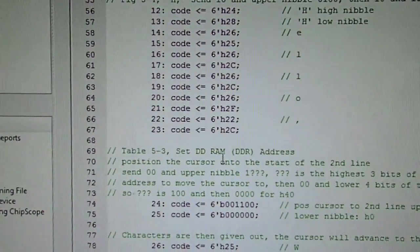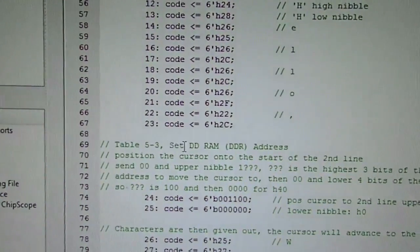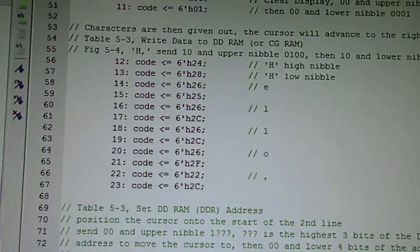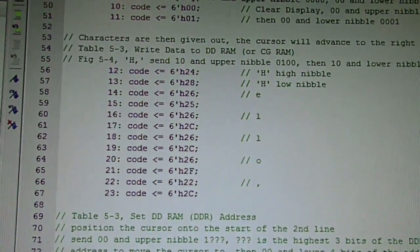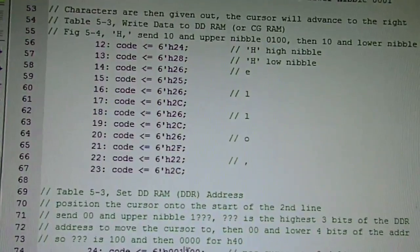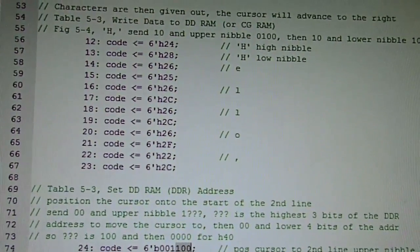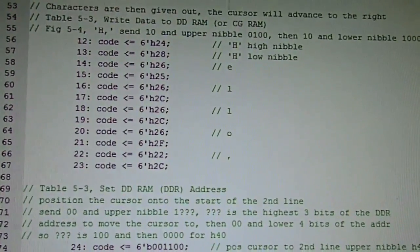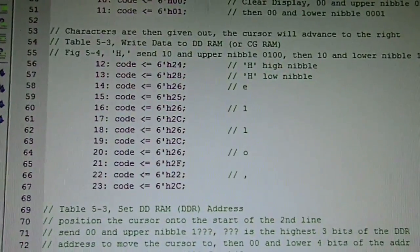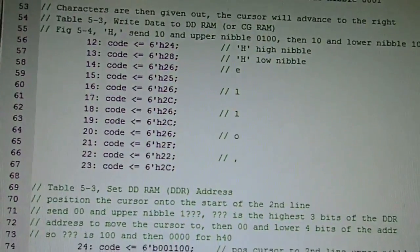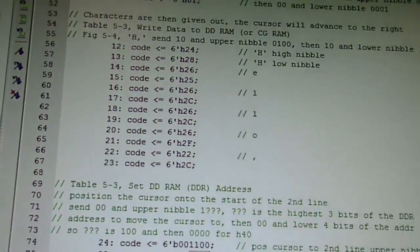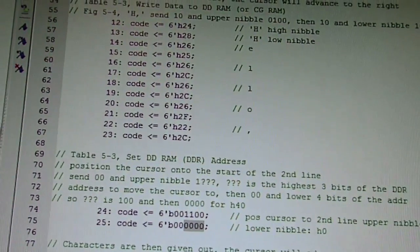Then we want to change the cursor position, so it's called set the DDR address. If you want to switch it to hex 40 as the beginning of the second row, we send down 0001 as the initial command ID, and then we have 100 as the 4. The second time is 00, and then we have 0000 as the 0 for the hex 40. So the upper nibble is 4, the lower nibble is 0. After doing that, we send out the word World, W-O-R-L-D exclamation mark.